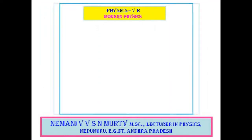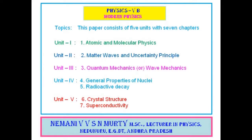Physics 5B title is Modern Physics. This paper consists of 5 units with 7 chapters. Unit 1 and Unit 2 are Atomic and Molecular Physics. Unit 3 is Quantum Mechanics. Unit 4 has 2 chapters: the 4th is General Properties of Nuclei, and the 5th is Radioactive Decay. Unit 5 has 2 chapters: the 6th is Crystal Structure, and the 7th is Superconductivity.